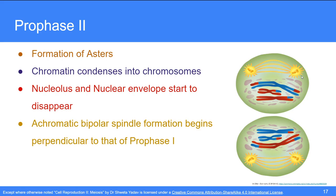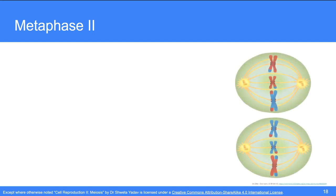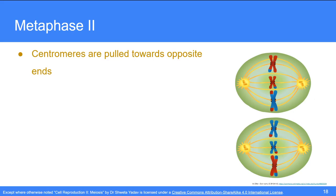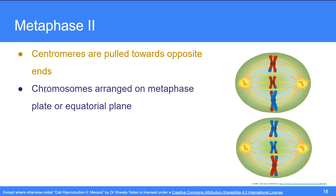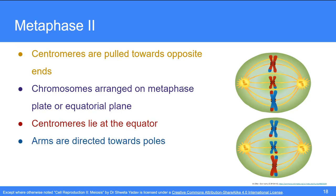In metaphase 2, the centromeres are pulled towards opposite ends as the kinetochores are attached to spindles from both sides. The kinetochore of each sister chromatid is attached to spindles from opposite poles. Due to this, chromosomes are arranged on the metaphase plate or equatorial plane, as clearly seen in the image. The centromeres lie at the equator while the arms are directed towards the poles, and chromosomes are highly condensed.